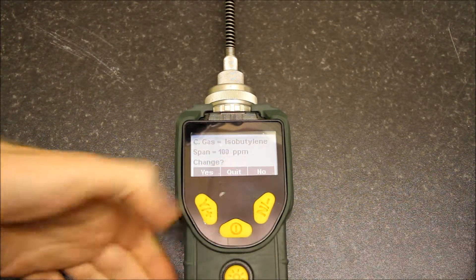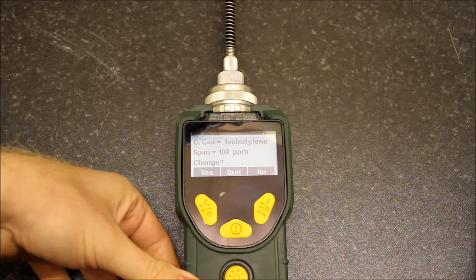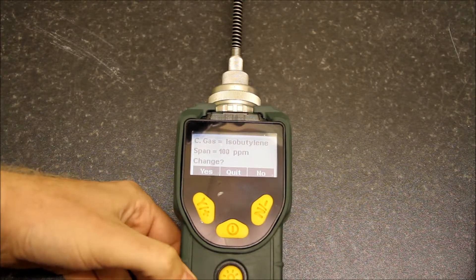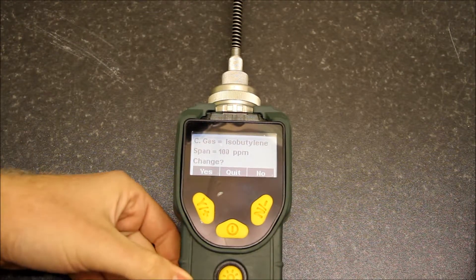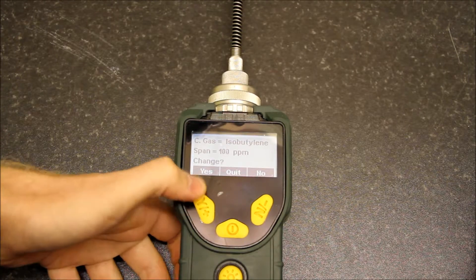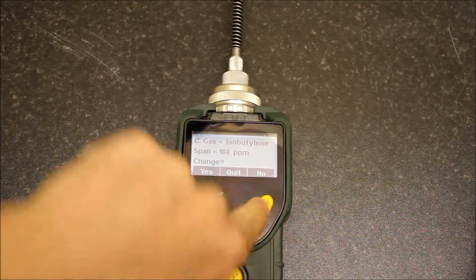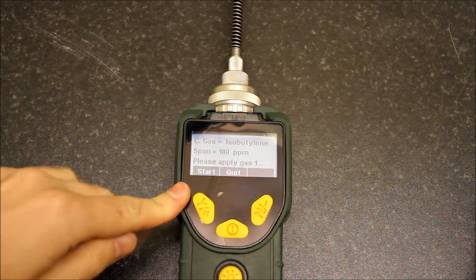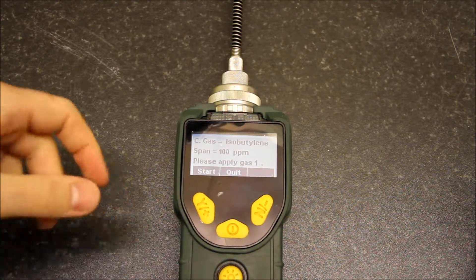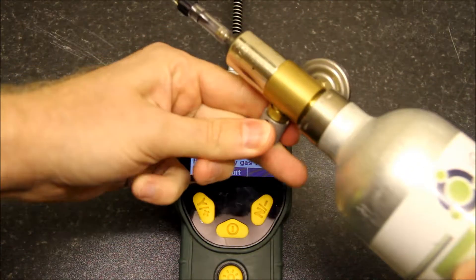We now press select. It's asking for what type of gas we're using and the span value. We are using 100 ppm isobutylene, and as such we don't need to change the value here. At this point we say no. Now it's asking for the gas to be applied, so I take my gas and turn it on fully.